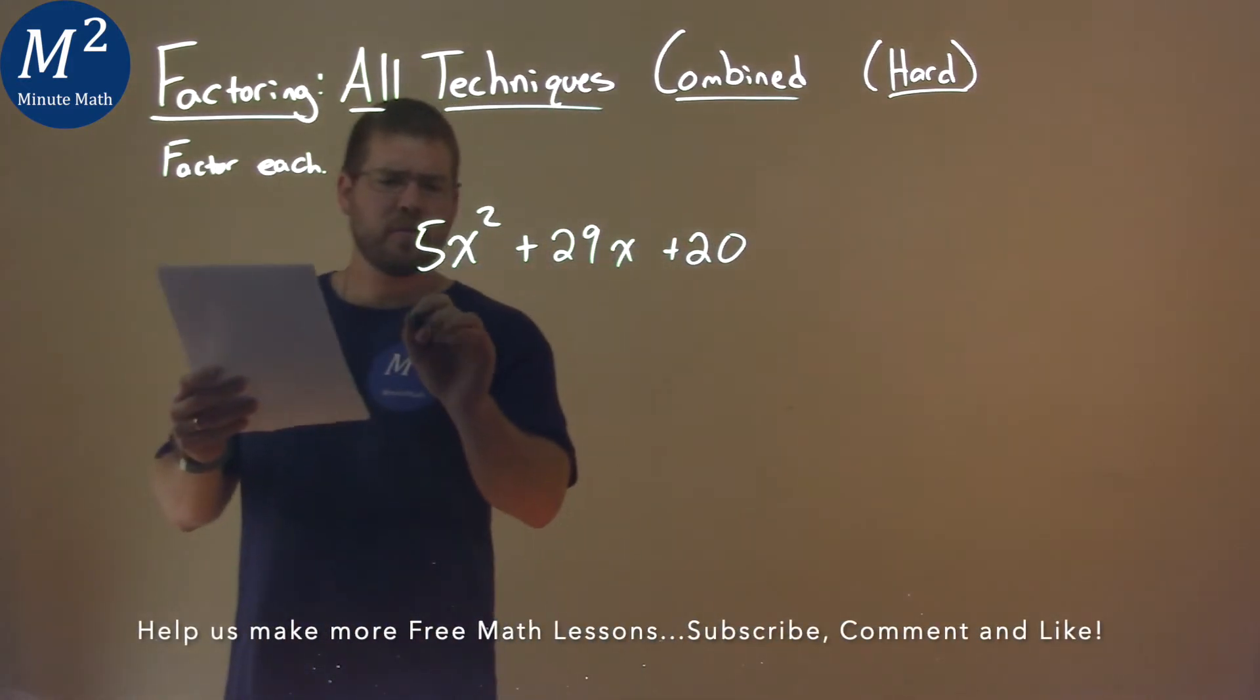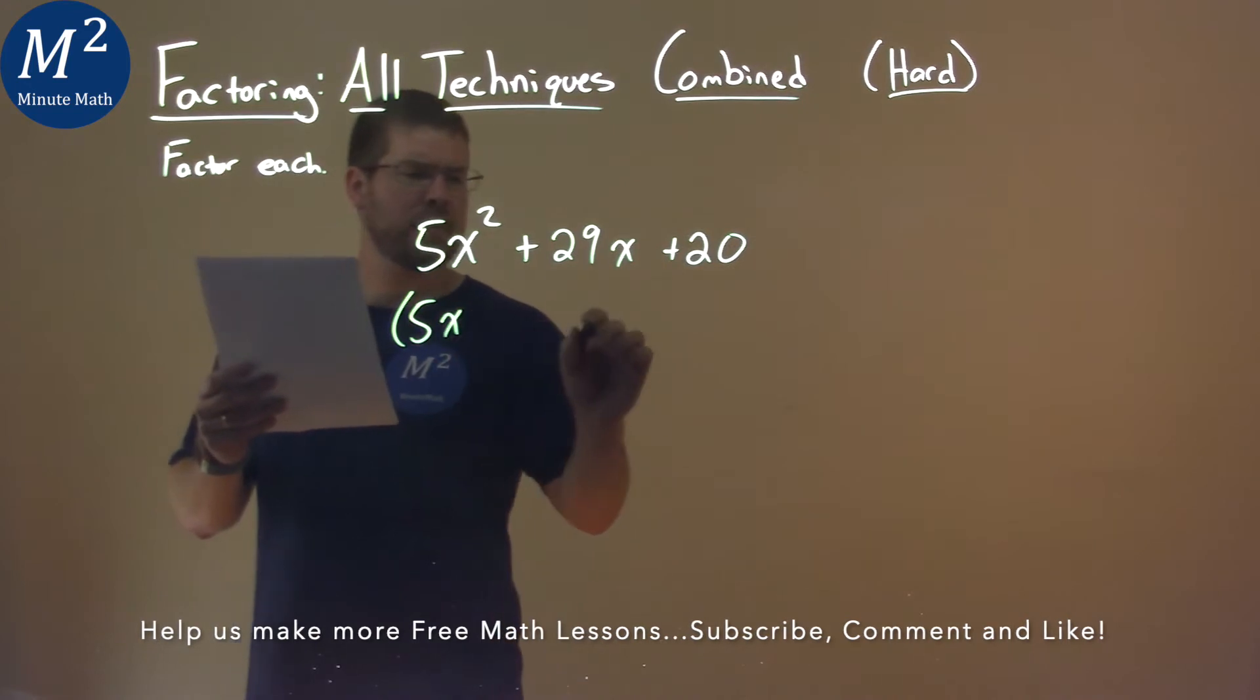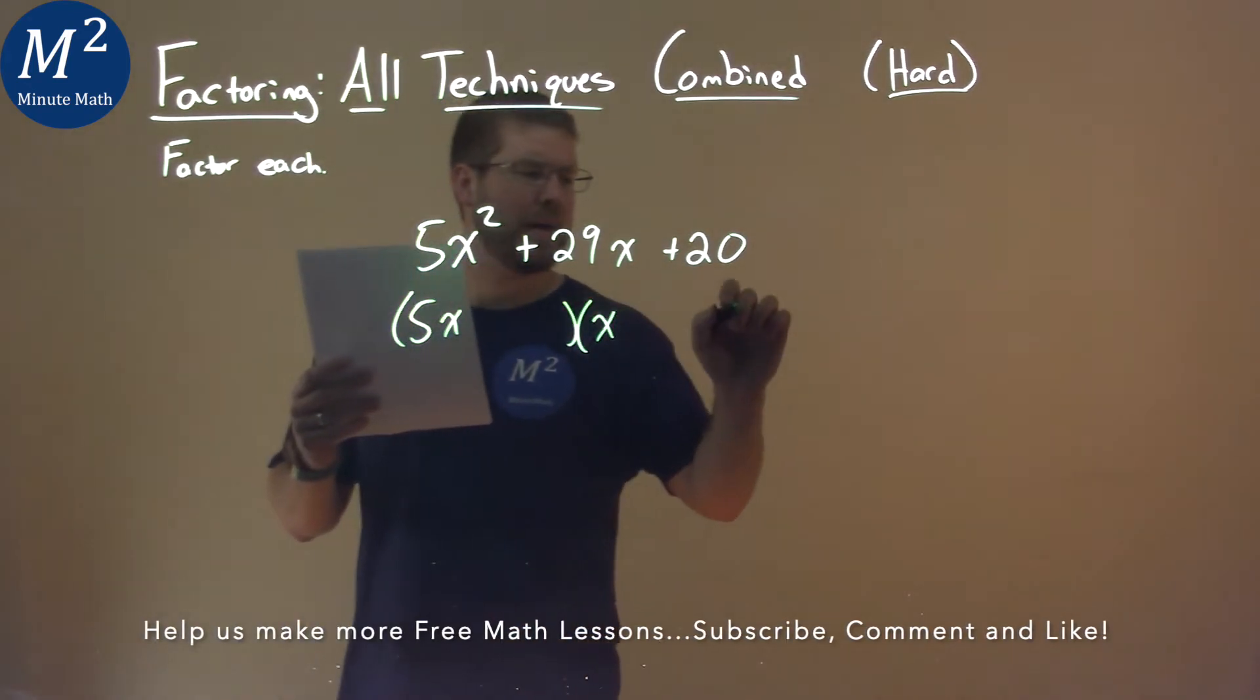Well, our a value is 5, so we have some form of 5x like this times some x like that.